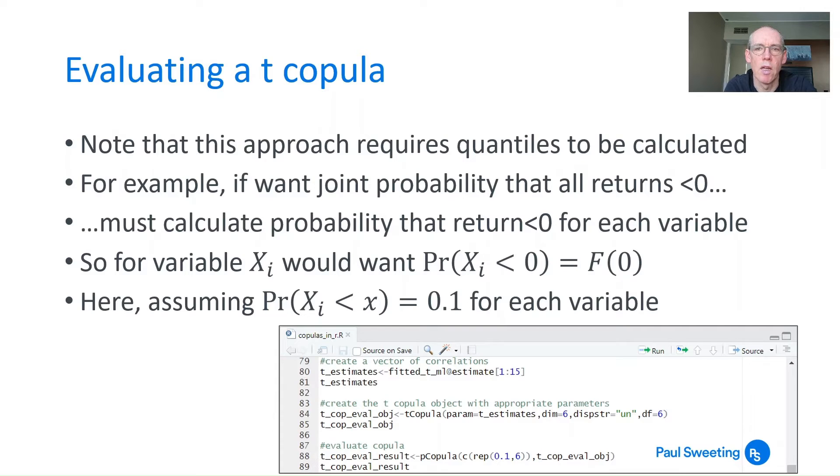This requires the quantiles to be calculated. If you wanted to know the joint probability that all returns were below 0, you'd need to calculate the probability that each return was below 0. We're looking at things in terms of quantiles. If we wanted something explicit in terms of returns, we'd need to calculate the probability of each individual return, which would then be joined by the copula.